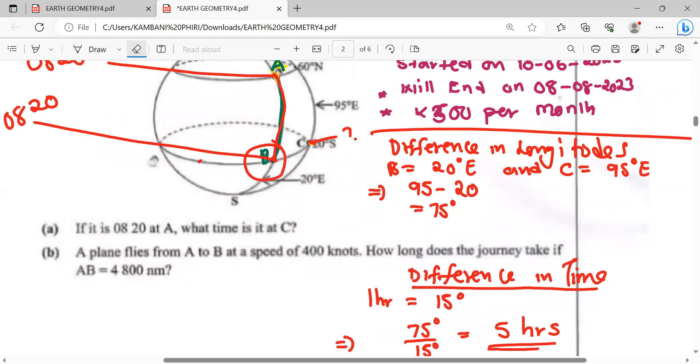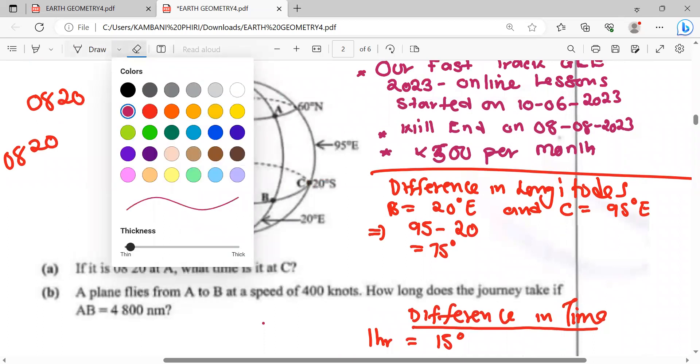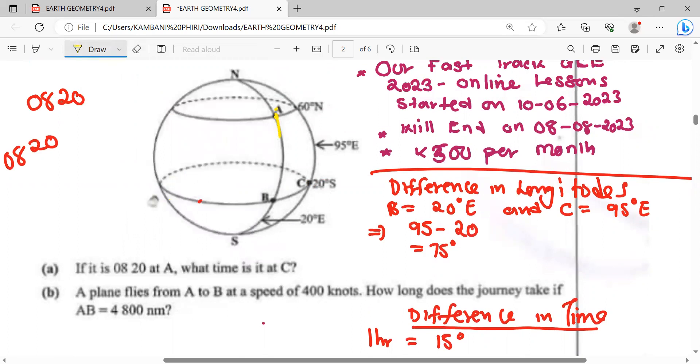Now we are saying a plane flies from point A to point B at a speed of 400 knots. How long does the journey take if AB is 4800 nautical miles?